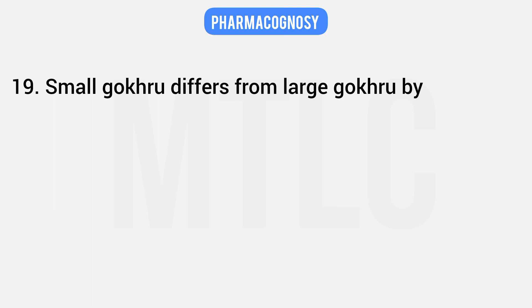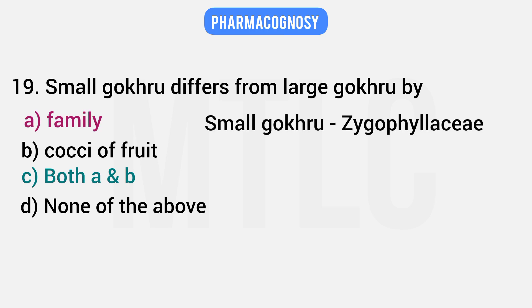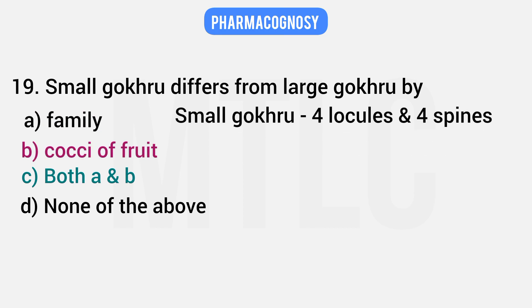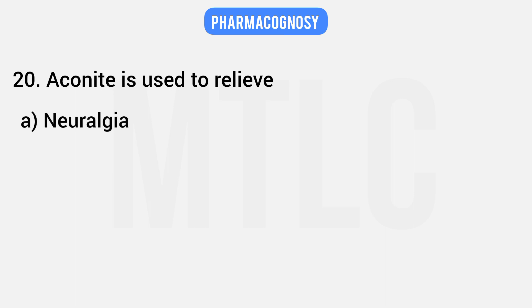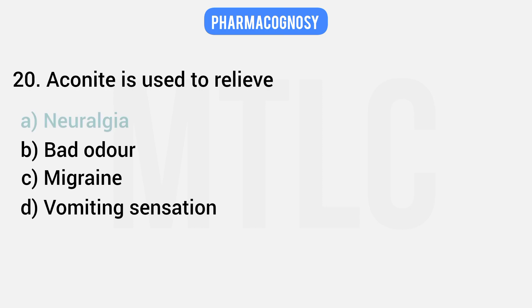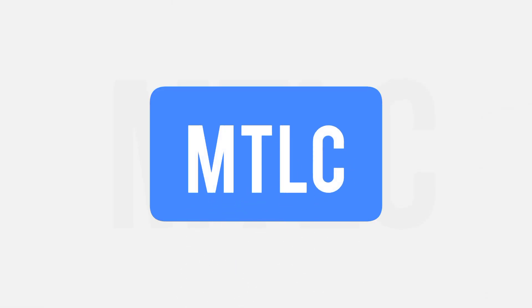Final question: how does small Gokru differ from large Gokru? The answer is both family AND locules of fruits. Small Gokru belongs to Zygophyllaceae while large Gokru belongs to Pedaliaceae. Small Gokru fruits can be subdivided into four locules, whereas large Gokru fruits cannot be divided but have four spines. So the correct answer is Option C — both A and B.